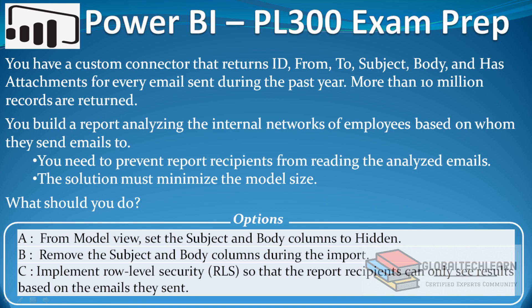Let's understand the question. As per the question, we have emails data that has fields like email ID, then 'from' — that means from whom the email has been sent — then 'to', that is to whom the email has been sent, then subject of the email, then body which should have the conversation text of the email, and thereafter we have the 'has attachment' column if there is any attachment in the email.